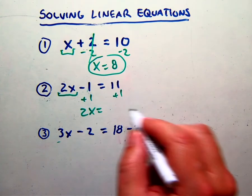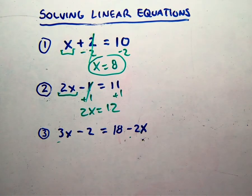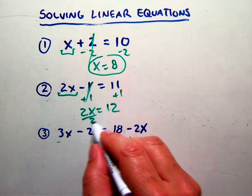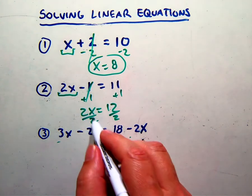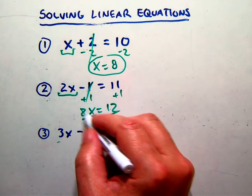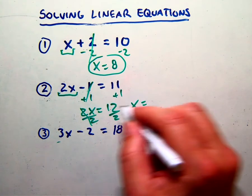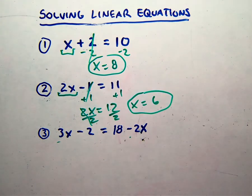So 2x is now equal to 12. And now you want to divide both sides by 2. If you're multiplying by 2 to the x, you want to divide by 2 to get that to go away. And what you're left with is x equals 6 on the other side. So that's the solution to the two-step equation.